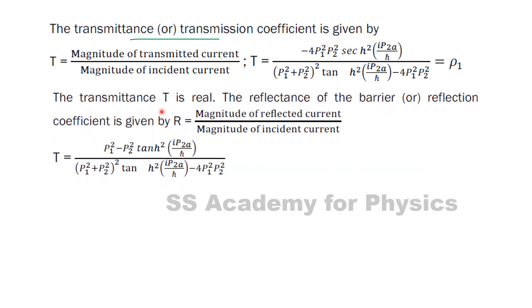The transmittance T is real. The reflectance of the barrier or reflection coefficient is given by R equals the magnitude of reflected current divided by the magnitude of incident current.